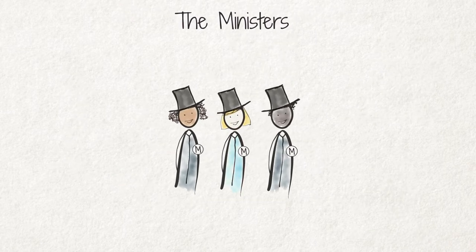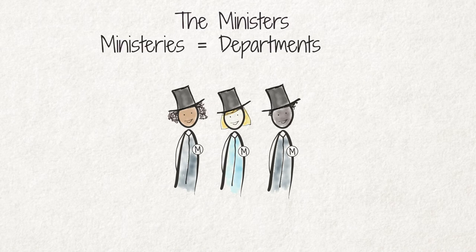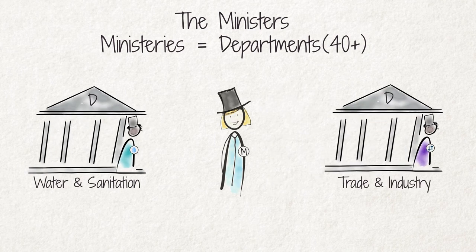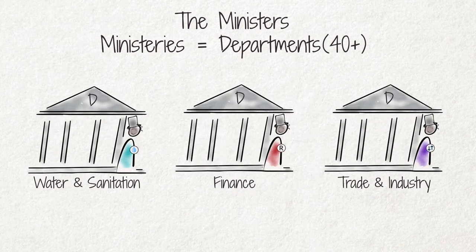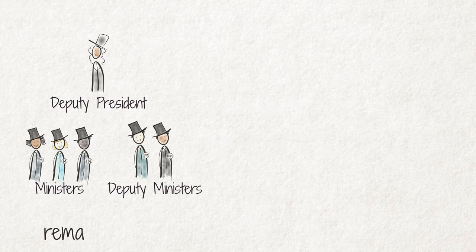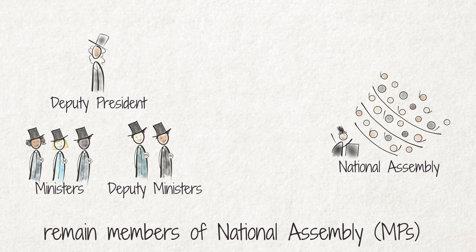The ministers are the heads of different ministries, also referred to as departments. There are more than 40 departments in the South African government — examples include water and sanitation, trade and industry, and finance. Ministers share their responsibilities with deputy ministers. The deputy president and ministers remain members of the National Assembly and are also referred to as members of parliament or MPs.